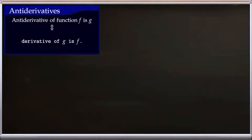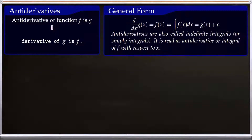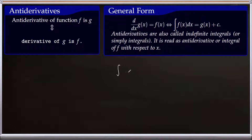In this video we are going to introduce antiderivatives briefly and then look at some examples. The antiderivative of a function f is g if and only if the derivative of g is f. If derivative of g is f, then we can say antiderivative of f is g of x plus C.